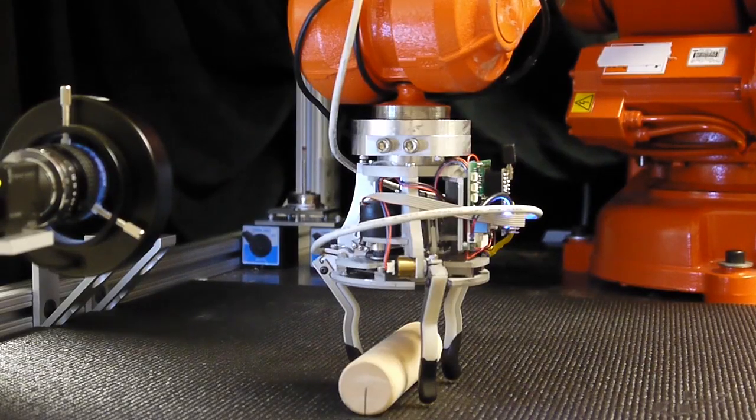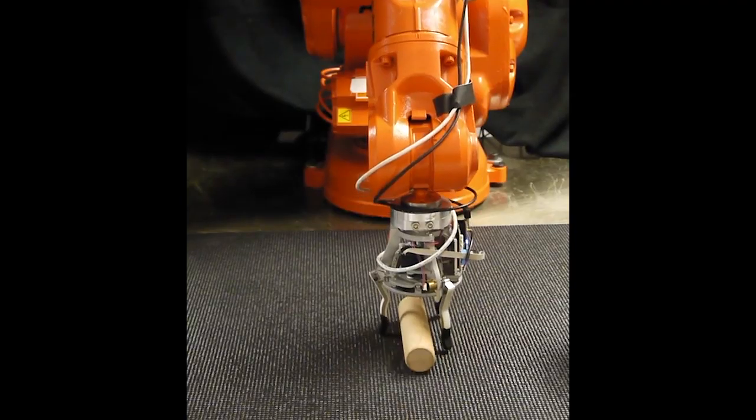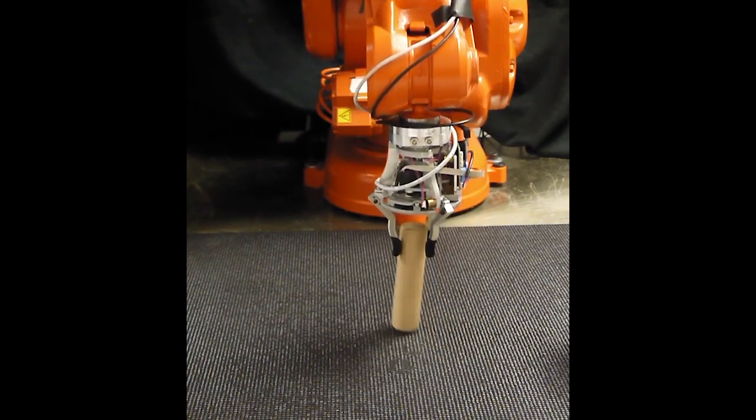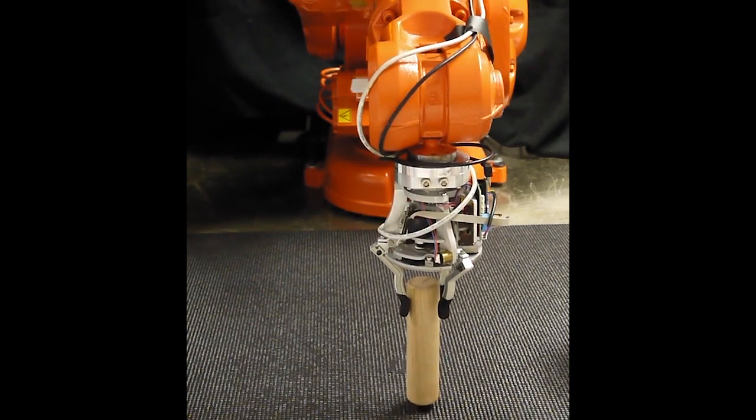Some of these actions don't look like regrasps, nor could they be described as in-hand manipulation, but all of these are ways to change the pose of the object relative to the hand. Some of these actions are also useful when grasping or placing an object.